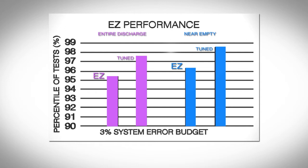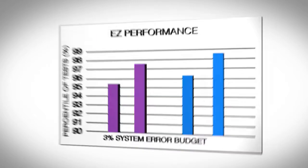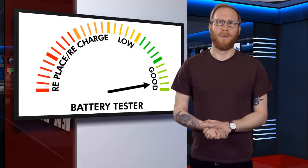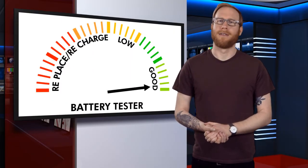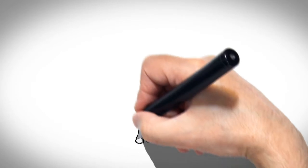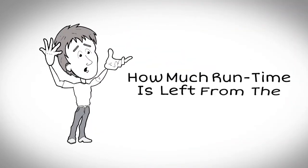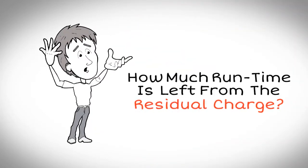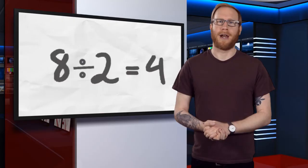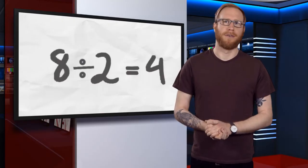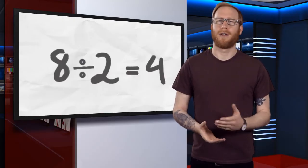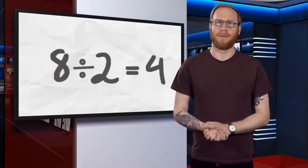The EZ mechanism performs at an even higher level of accuracy when the battery is near empty, and that's where it matters most. Simply knowing the SOC or the remaining capacity is not enough — what users really want to know is how much run time is left from the residual charge.